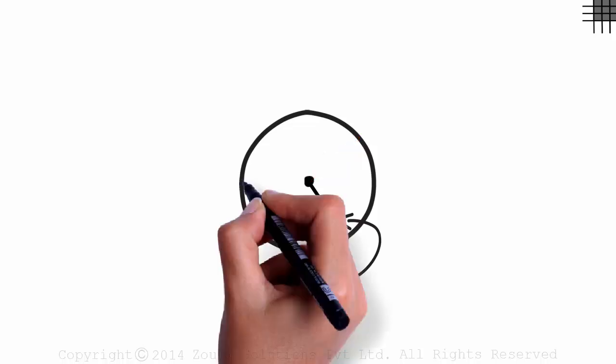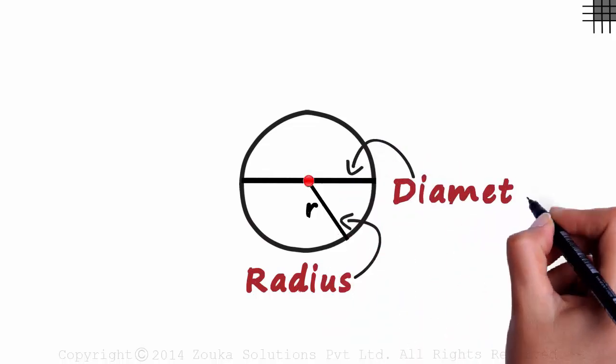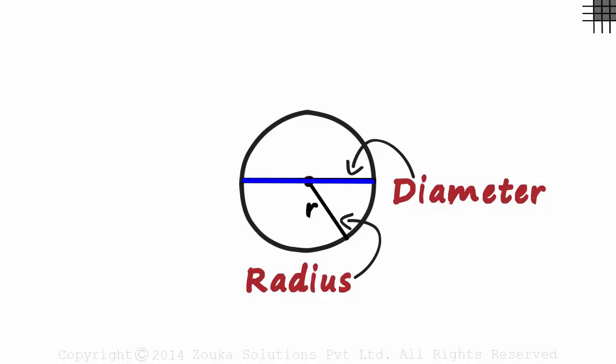A line segment like this which passes through the center is called the diameter. It passes through the center and its ends rest on the boundary of the circle. And as can be seen from the figure, its length will be twice the radius of the circle.